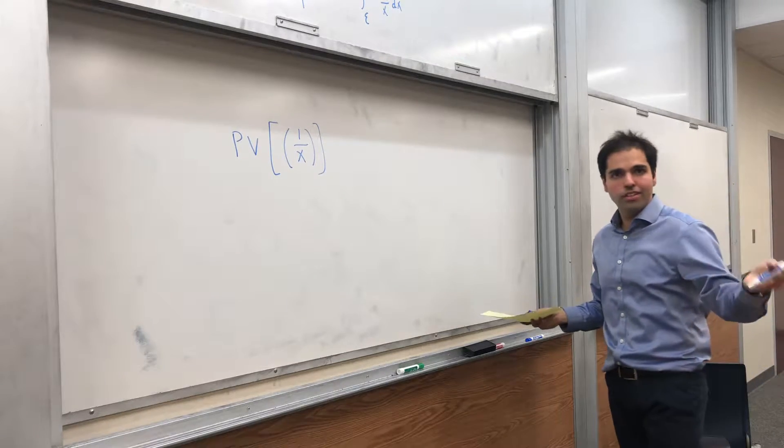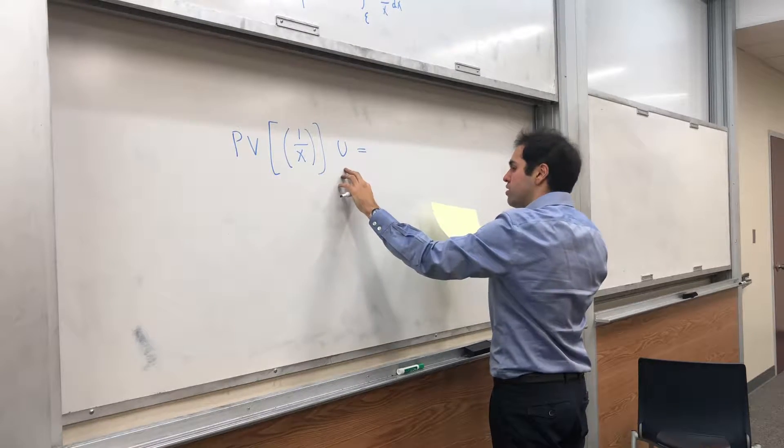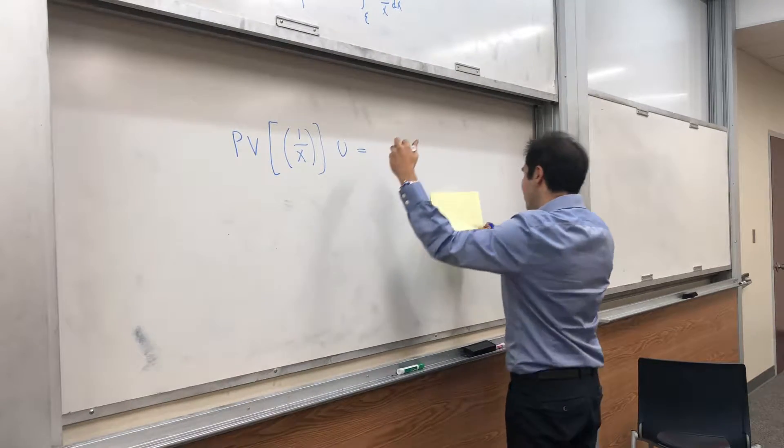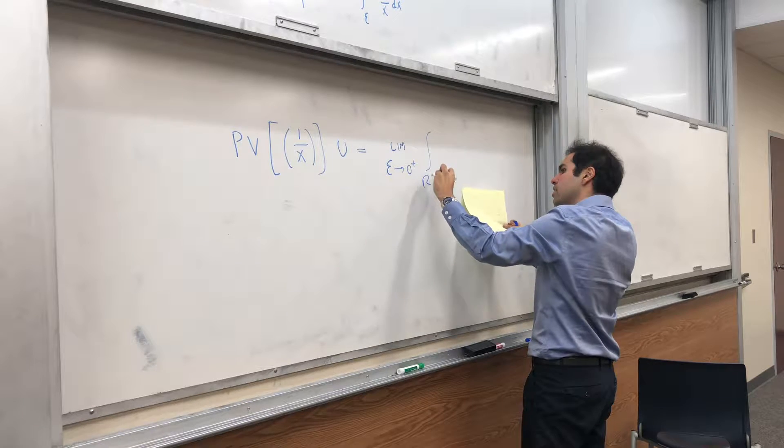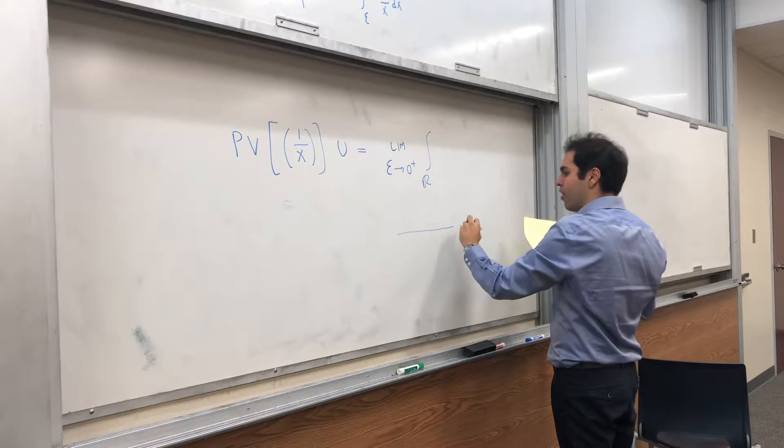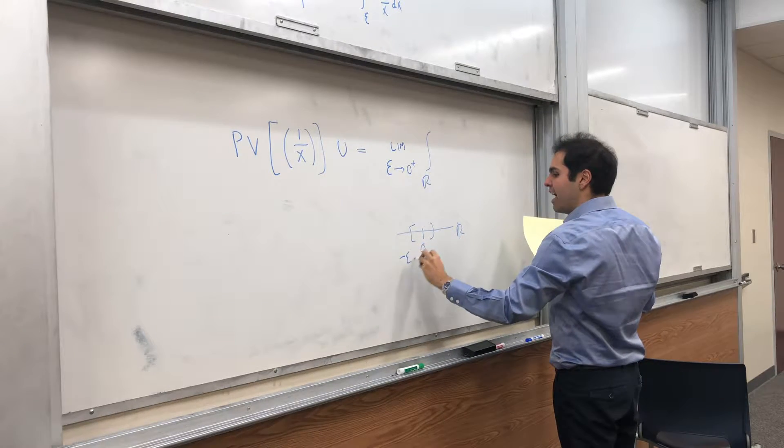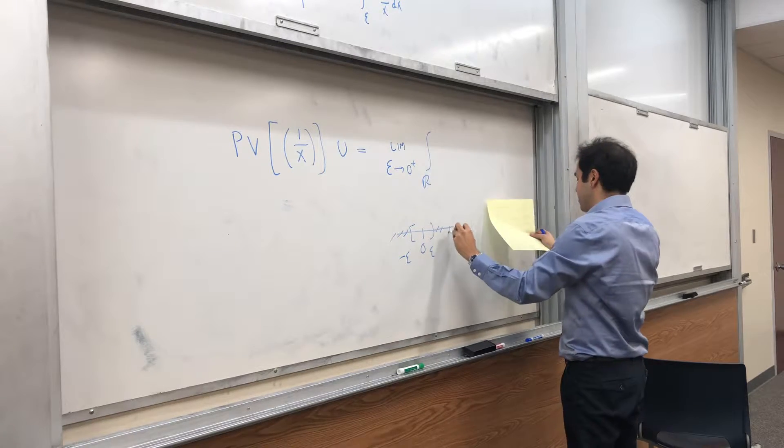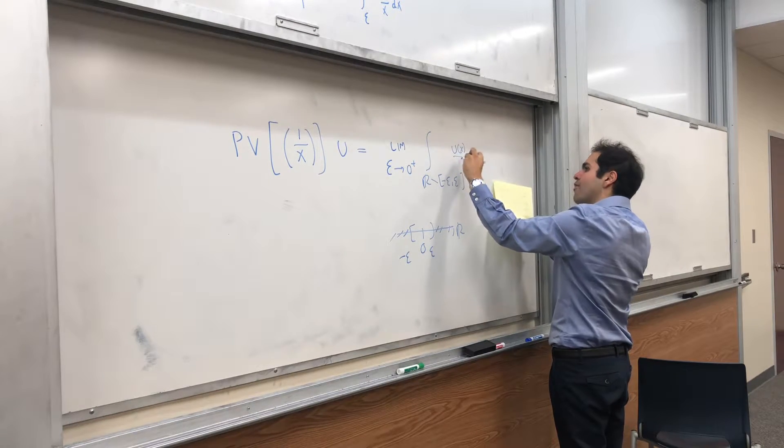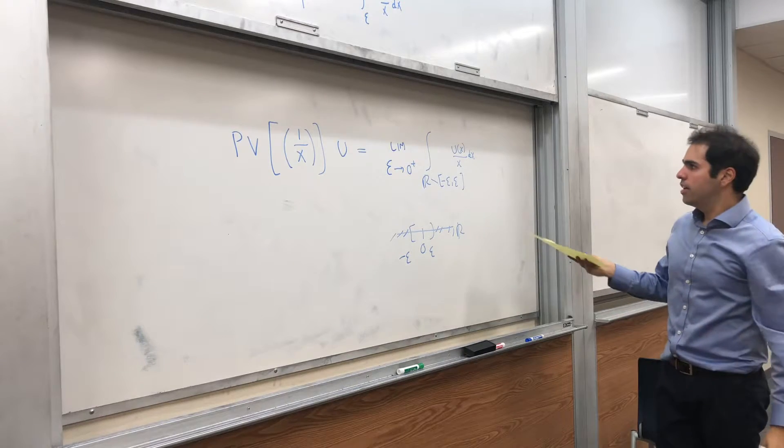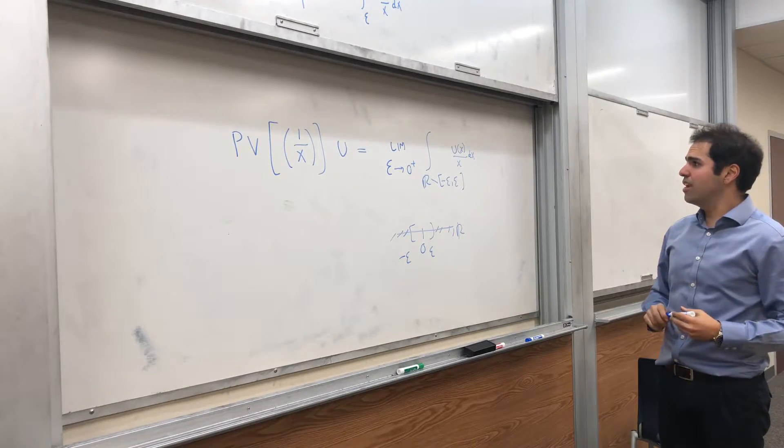Then the principle value distribution of u, okay, it's simply defined as the limit as epsilon goes to 0 plus of, the whole interval r, except, again, just as before, you just subtract an interval of the form minus epsilon to epsilon. So r without minus epsilon to epsilon of u of x over x dx. And this is great to study, you know, I guess if u has a singularity at 0.